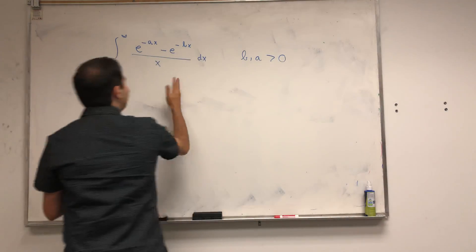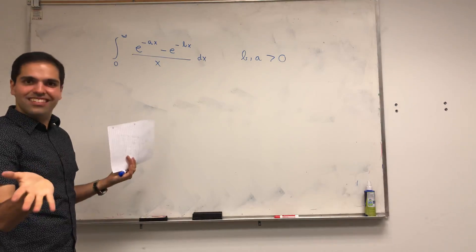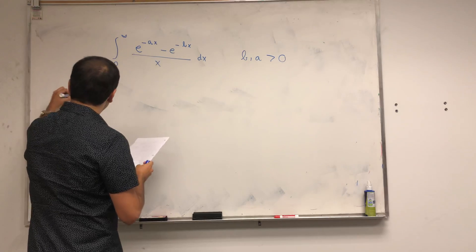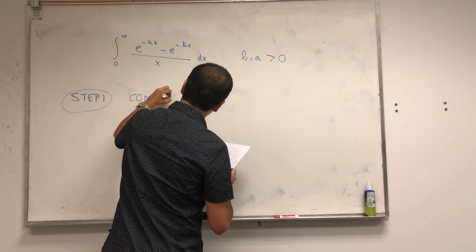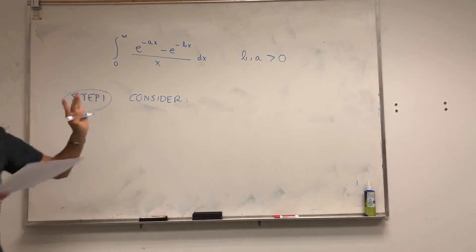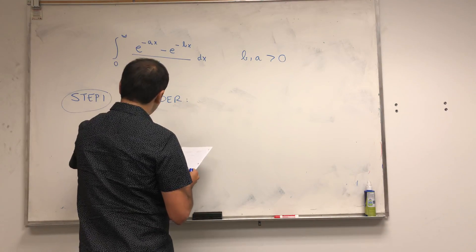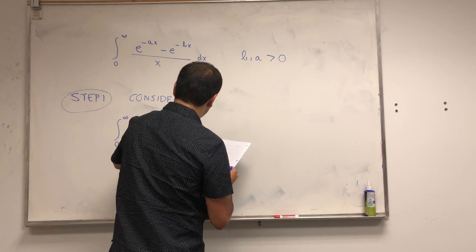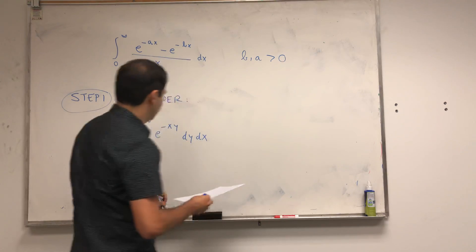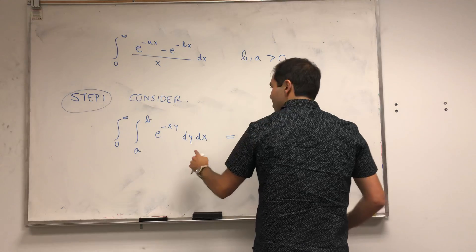It turns out this integral is finite and we'll be able to calculate its value using multivariable calculus. So, step one: consider the following integral — from 0 to infinity and from a to b of e^(-xy) dy dx. I'll show you that this double integral actually gives us the original integral.